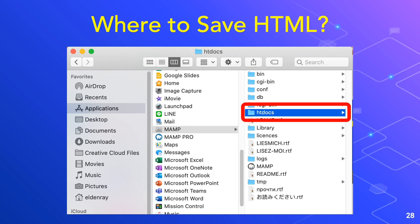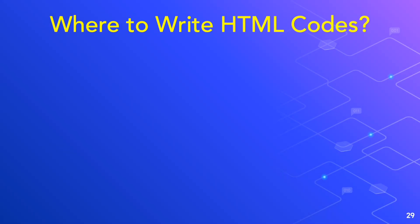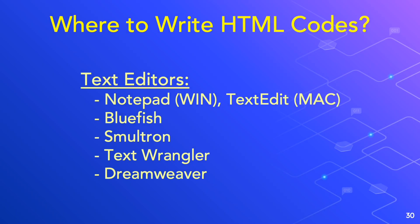The next question is where to write HTML codes. There are actually several options, and I'll show you a few examples in the next slide. We write HTML in text editors. Examples include Notepad for Windows, TextEdit for Mac, Bluefish, Smultron, TextWrangler, and Adobe Dreamweaver. But there's another one that's quite handy and flexible — we will be using Sublime Text Editor throughout this course. Sublime Text Editor is already installed in the lab computers, but for those taking an online class, I'll show you how to install it in the next slide.